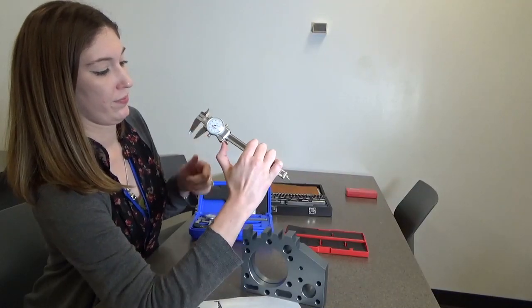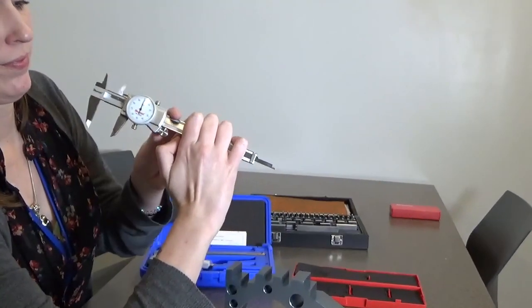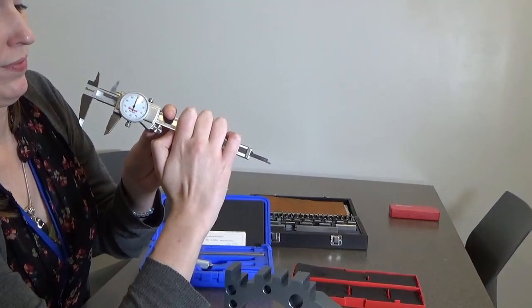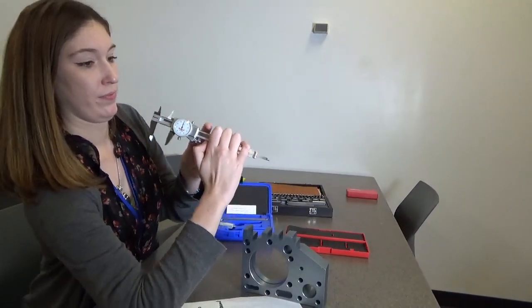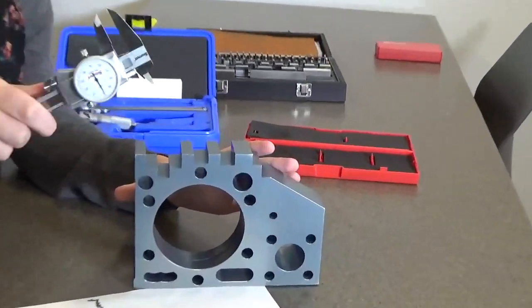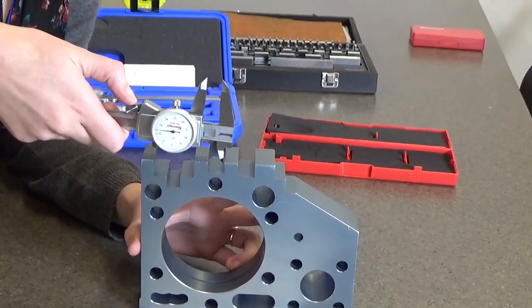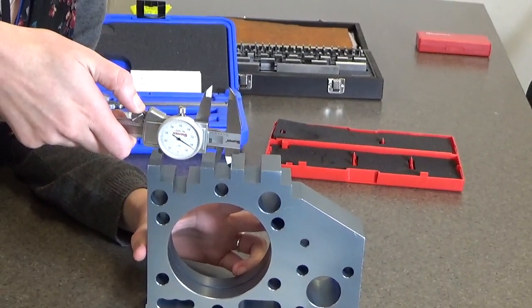We also have on the other side of the jaws, we have little fingers for making an inside measurement. So that's what Taylor just pointed to. And if we use those, we can actually pull that between two surfaces. Like she's demonstrating here.